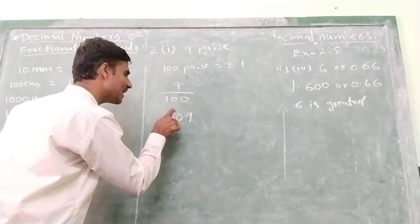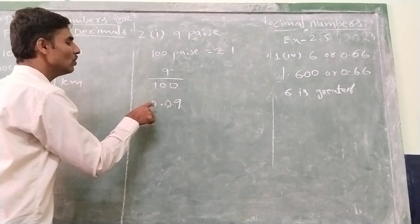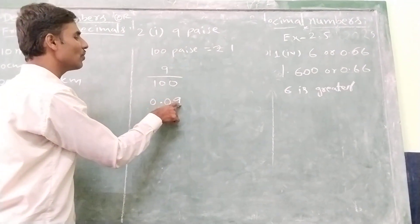1, 2. Here decimals are not there in 9, so I add a 0. The answer is 0.09 rupees.